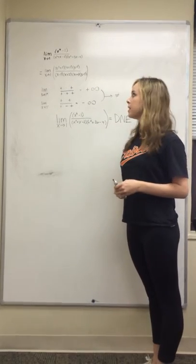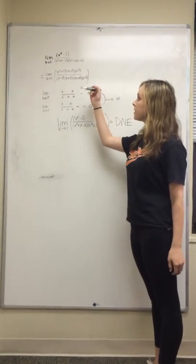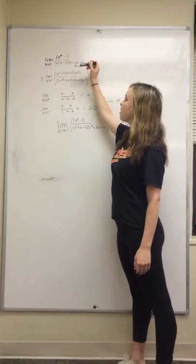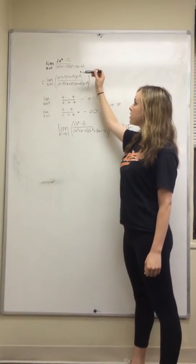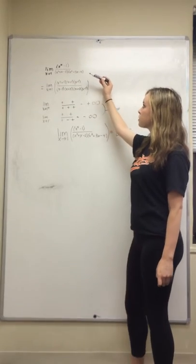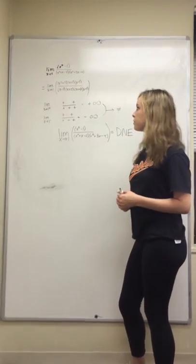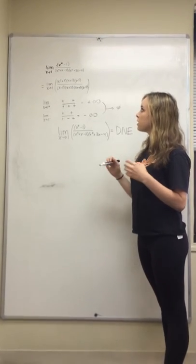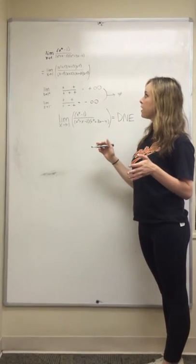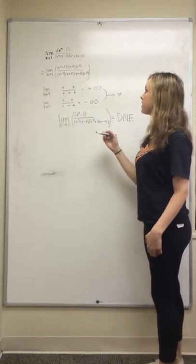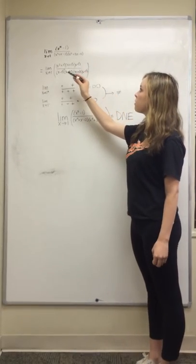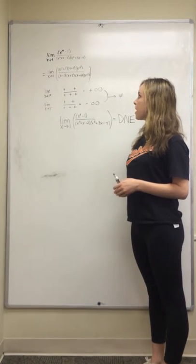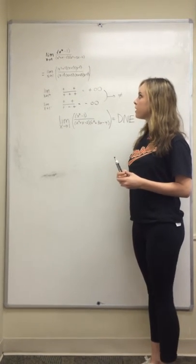We're going to take the limit as x approaches 1 of this function: x to the 4th minus 1, over x squared plus x minus 2, times x squared plus 3x minus 4. The first thing we're going to do is expand everything in order to see if we can cancel things. When you expand the top, you get x squared plus 1, times x plus 1, times x minus 1.